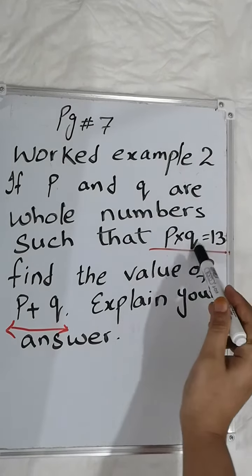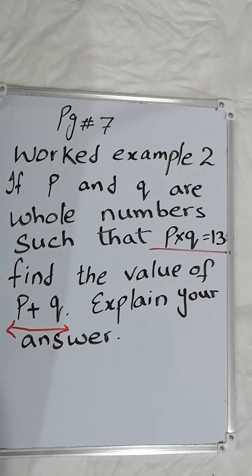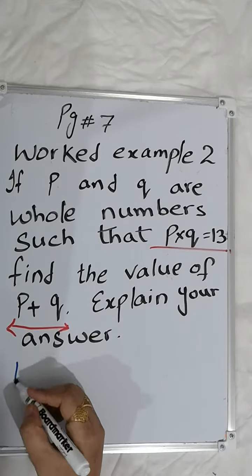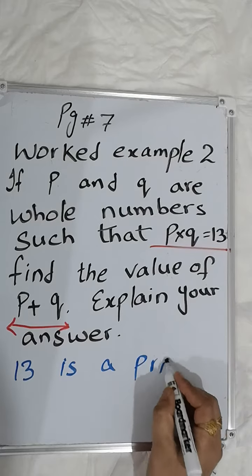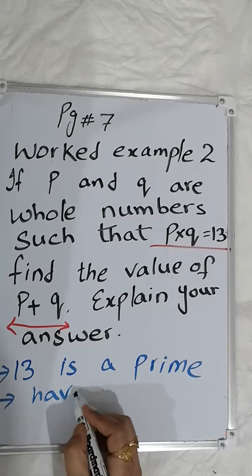The product of P and Q is equal to 13, and we know that 13 is a prime number. So in our answer we can write that 13 is a prime number. It has only two factors.